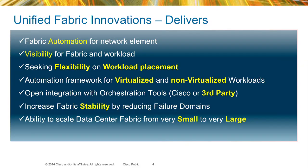With the unified fabric innovation — and when we talk about unified fabric, it's basically all of the Nexus platforms in Cisco today, the Nexus 2K, 5K, 6K, 7K, and also the 9K — what we want to do is provide visibility into the fabric of exactly where our workloads are.